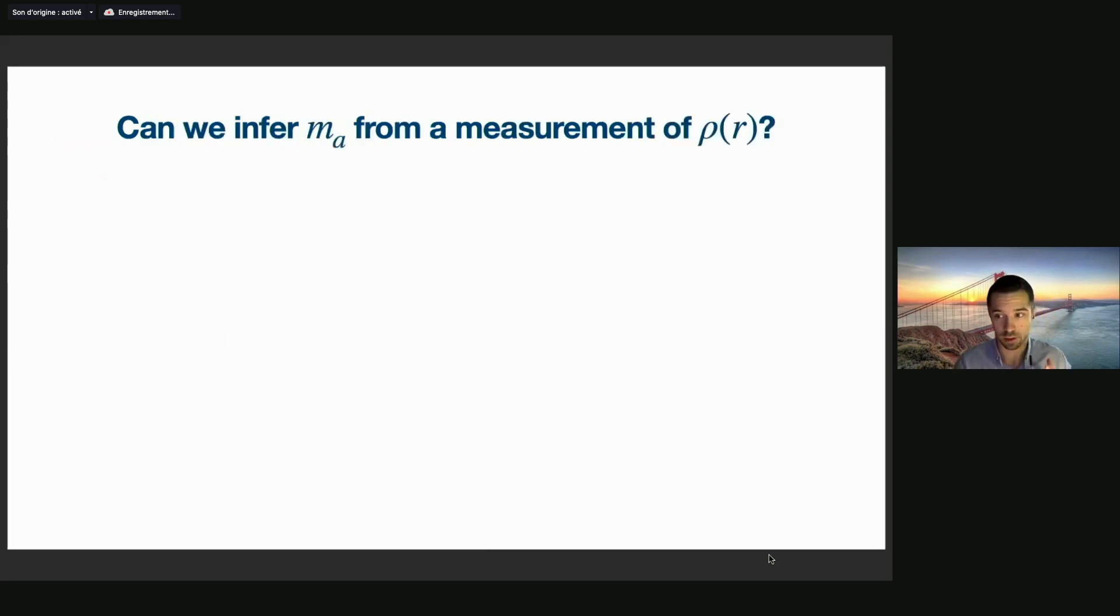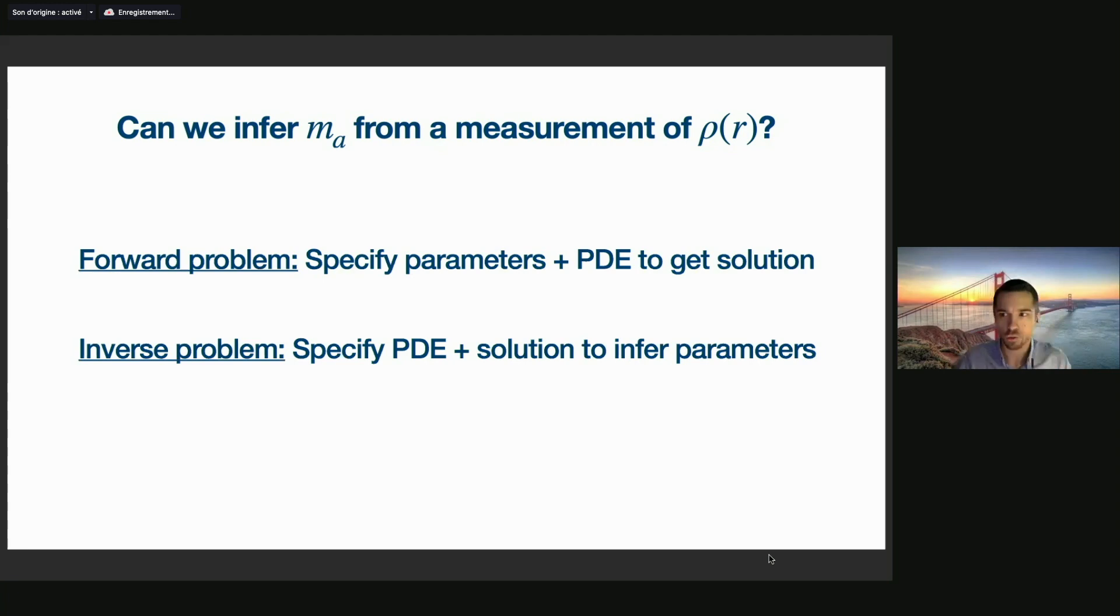And the goal in my research, what I've been trying to do, is to infer the axion mass from a measurement of the density. Can I use some observation of lensing or rotation curves and measure the mass of the dark matter even if it is a subcomponent? There are two approaches to do this. The first one would be to solve what we call the forward problem, like running simulations for a wide range of parameters until I get some scaling relation and using these scaling relations to get the mass. This is unfortunately extremely expensive because the hydrodynamical simulations of the Schrödinger equation are really expensive. What we would like to do instead is to solve the inverse problem: start with the data and specify the PDE describing this data, and then infer the parameters from those two things.